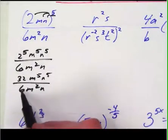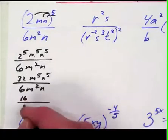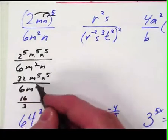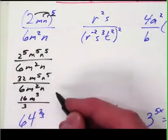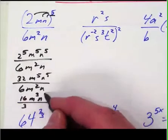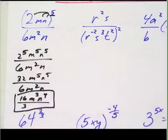So 32 divides by 2 so does 6, these both are divisible by 2 so I get 16 over 3 and then these I've got m to the fifth and m to the second. This has three more up top so I'm going to put three more up top. This has four more up top so it's n to the fourth. So here is the answer to the first problem and that is how you get it.